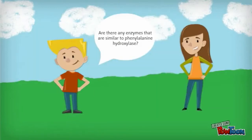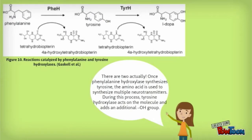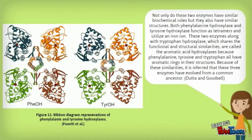Are there any enzymes that are similar to phenylalanine hydroxylase? There are two actually. Once phenylalanine hydroxylase synthesizes tyrosine, the amino acid is used to synthesize multiple neurotransmitters. During this process, tyrosine hydroxylase acts on the molecule and adds an additional OH group. Not only do these two enzymes have similar biochemical roles, but they also have similar structures. Both phenylalanine hydroxylase and tyrosine hydroxylase function as tetramers and utilize an iron ion. These two enzymes, along with tryptophan hydroxylase, which shares the functional and structural similarities, are called the aromatic acid hydroxylases because phenylalanine, tyrosine, and tryptophan all have aromatic rings in their structures. Because of these similarities, it is inferred that these enzymes have evolved from a common ancestor.